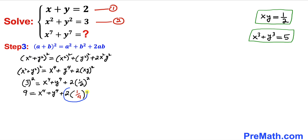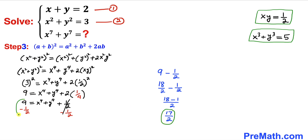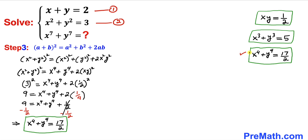Subtracting 1/2 from both sides, 9 minus 1/2 simplifies to 17/2. So therefore x⁴ + y⁴ = 17/2. To summarize what we have found: xy = 1/2, x³ + y³ = 5, and x⁴ + y⁴ = 17/2.